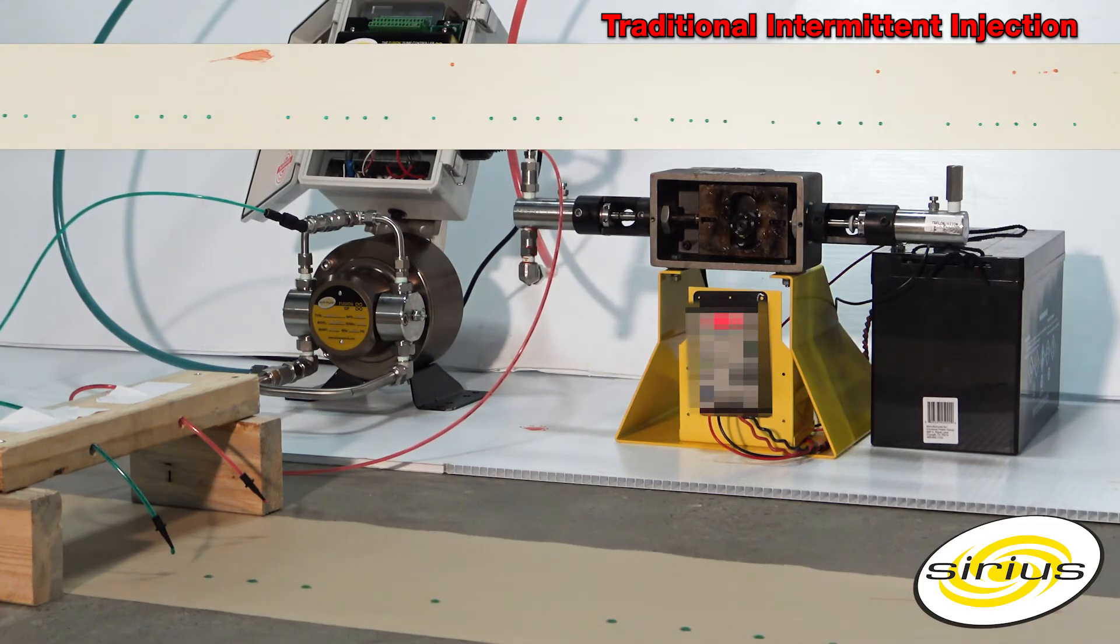An accurate continuous injecting pump can have a significant positive impact on the chemical program, resulting in an effective treatment and a reduction in chemical usage.